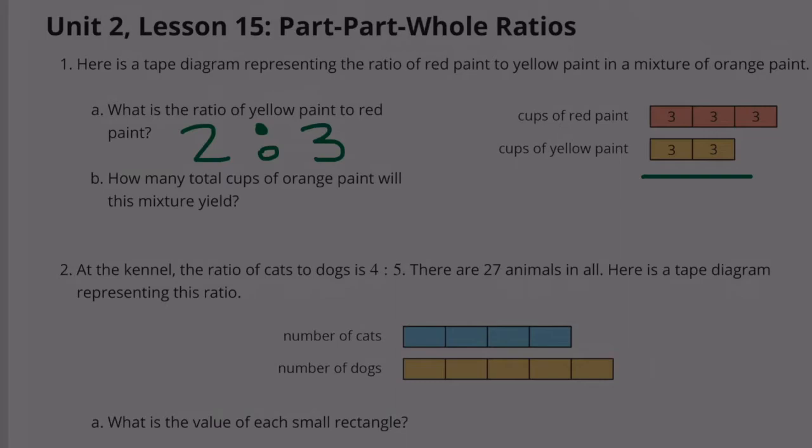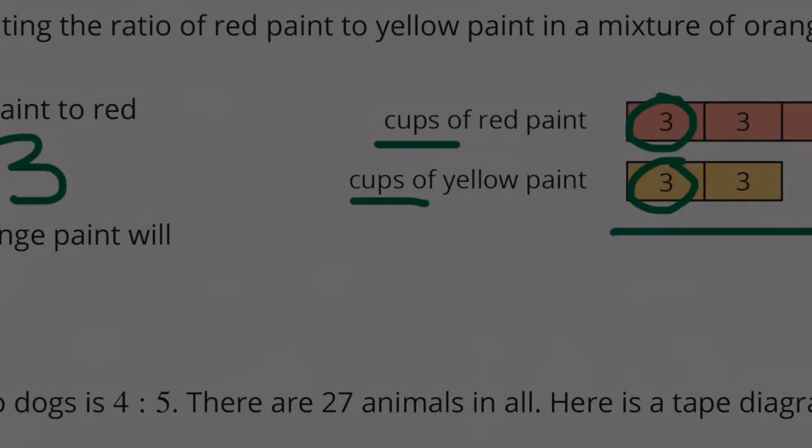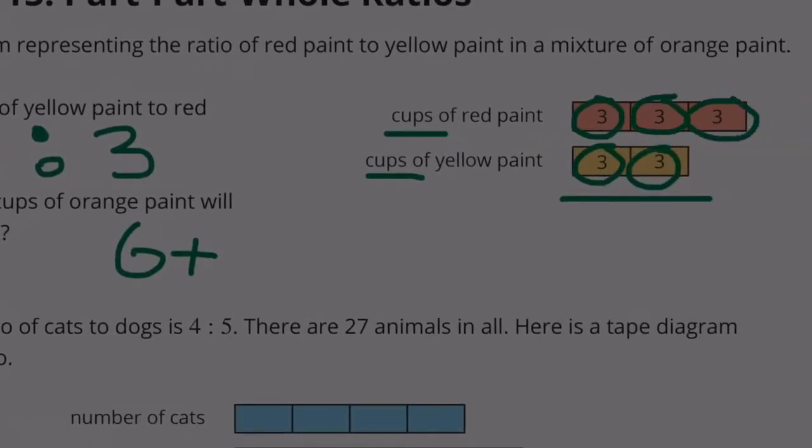B. How many total cups of orange paint will this mixture yield? These are cups. This represents 3 cups. So yellow, there is a total of 6 cups, plus red, 9 cups. This is going to yield 15 cups of orange paint.